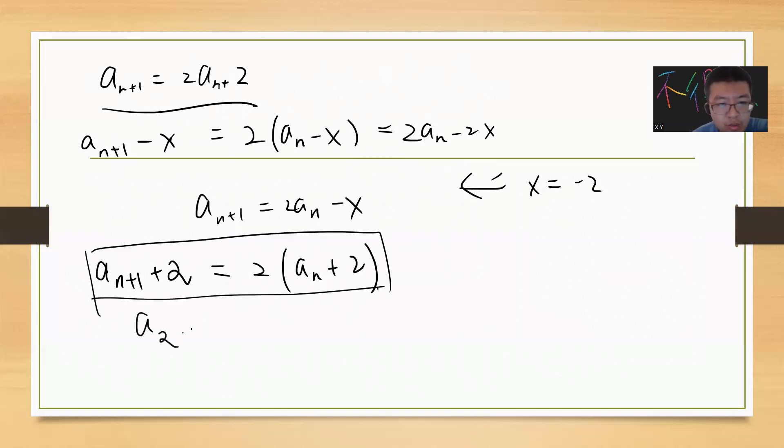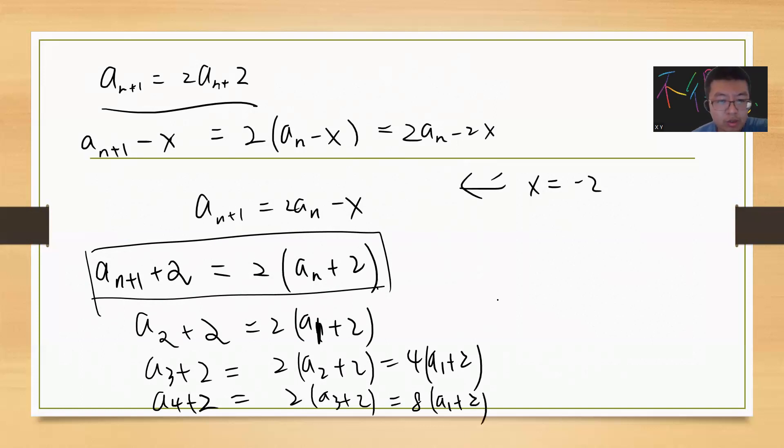This equation is powerful because it tells you that a_2 + 2 = 2(a_1 + 2), and a_3 + 2 = 2(a_2 + 2) = 4(a_1 + 2). You can see that a_4 + 2 = 2(a_3 + 2) = 8(a_1 + 2). This tells you that a_n + 2 = 2^{n-1}(a_1 + 2).